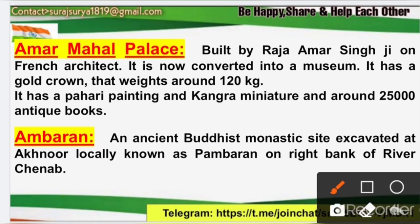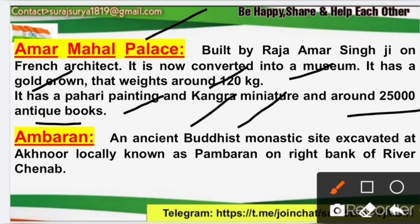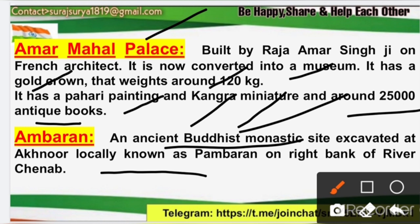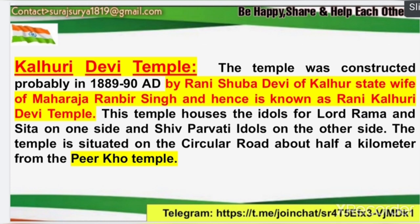Next is Amar Mahal Palace, built during the reign of Raja Amar Singh, featuring French-style architecture. It has been converted into a museum. Inside, there is a golden crown weighing approximately 120 kg. The museum also features Pahari paintings and Kangra miniatures, and a collection of approximately 25,000 books. Amrian is also mentioned — it is an ancient Buddhist monastery (monastic site) located in Jammu district. In Akhnoor, it is locally known as 'Pamburn' and is situated on the bank of the Chenab River.